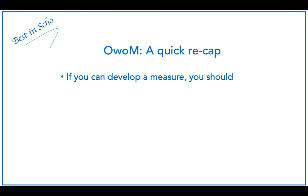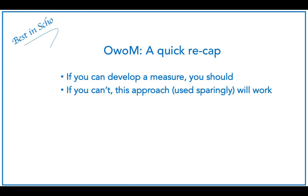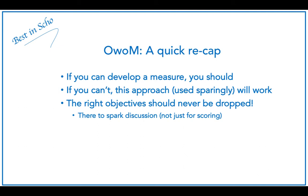Time for a quick recap — and this will always be true. If you can develop a measure with a reasonable amount of effort, you are encouraged to do so, as the primary engine of the balanced scorecard is fueled by measures. That said, if you simply can't determine a measure for your most important objectives, then don't. The objectives without measures approach, used sparingly, will work for you. The right objective should never be dropped just because a measure can't be developed — objectives are there in part for visibility and to spark discussion. Balance scorecarding isn't just about scoring.